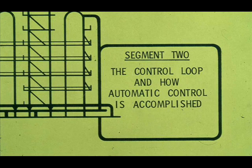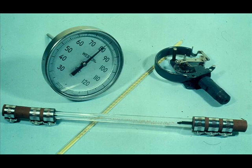Segment two deals with the control loop, and how automatic control is accomplished. We have talked about the various devices for sensing pressure, flow, temperature, and level. Now let's look at how these process variables are controlled. The control is accomplished through what is called a control loop.